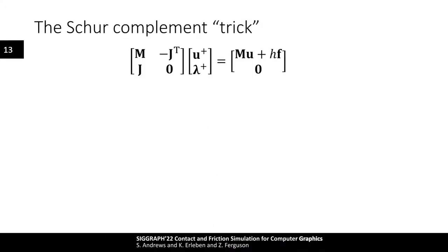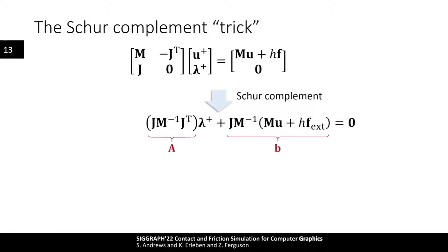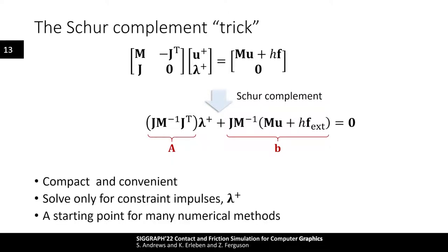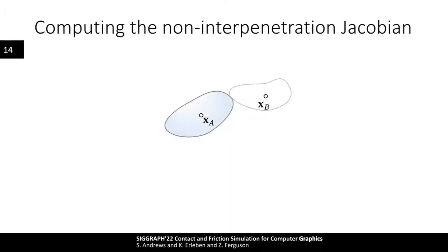Rather than solving for both body velocities and constraint impulses, we can form the Schur complement of the upper left block and reduce the linear system so that we only need to solve for the constraint impulses lambda. This is a more compact form, convenient for many of the numerical methods we will see later, since we only deal with one type of variable. Lambda remains non-negative.